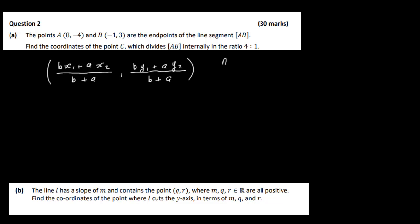We have the point A which is (8, -4). We have the point B which is (-1, 3). We've also got the ratio of 4 to 1. So let's say 8 is X1, -4 is Y1, -1 is X2, 3 is Y2, and here we've got A and B. It's a good idea to write those out just so you can keep track of them as you're putting them into this formula here.